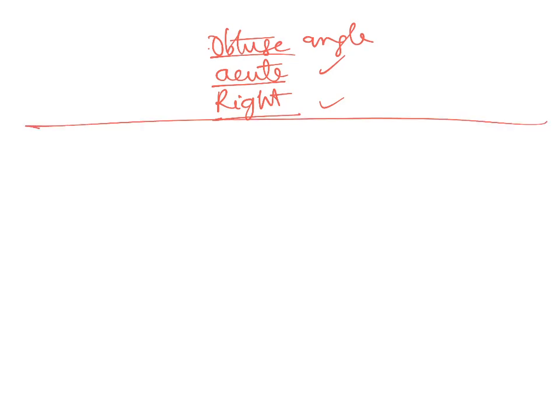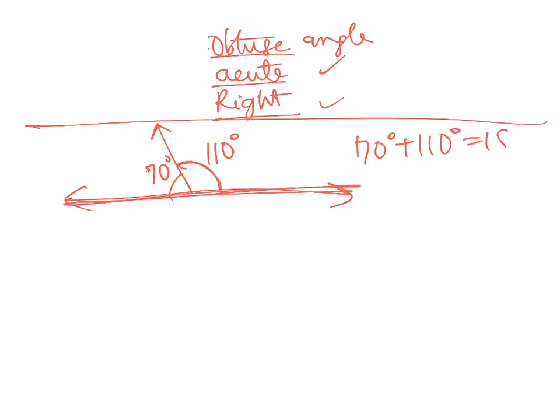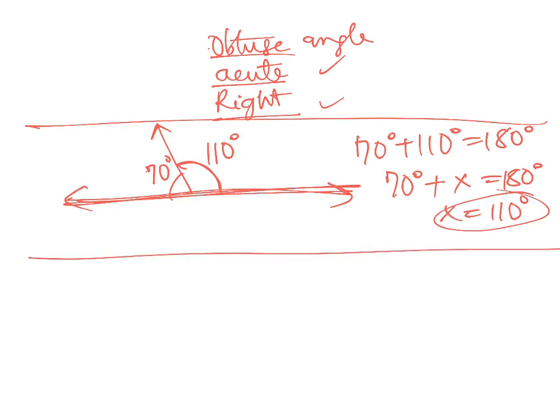One of the things we're going to look at again is we have angle on a straight line, it's 180 degrees. So if you draw an angle here and you have this being, let's call this 70 degrees. That means this angle over here has to be 110 because the total angle has to equal 180. So the other way you can write it is 70 degrees plus X is equal to 180 degrees.